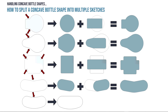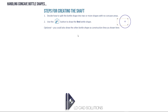Hopefully you can extend these examples to cover any kind of bottle shape you need to create. Let's take a look at the actual steps you need to cover inside the app. First, decide how to split the bottle shape into two or more shapes with no concave areas. Then use the normal app tools to draw the first bottle shape. Optionally, draw both shapes in a single sketch with the second one as construction lines so it won't extrude — then switch between them. Generate the shaft as usual; in this case we'll be generating with a circular bottle shape.